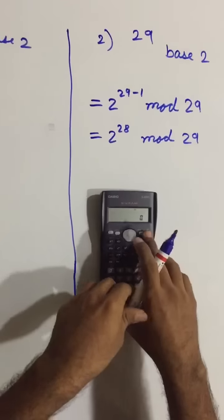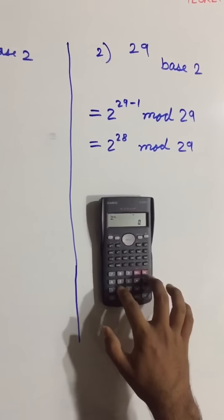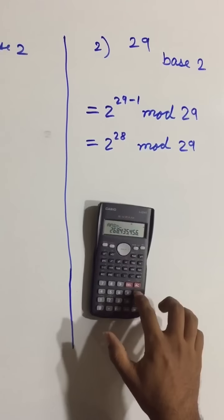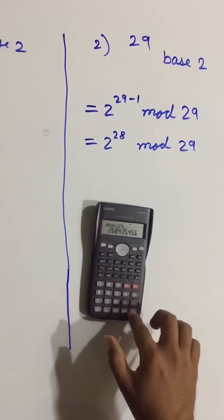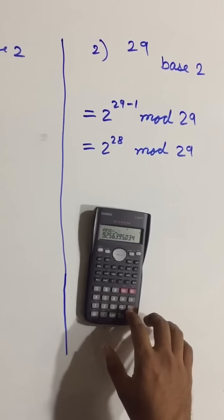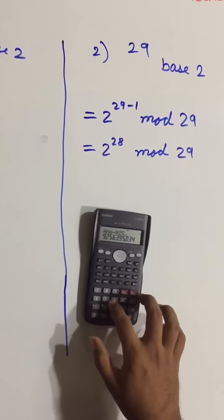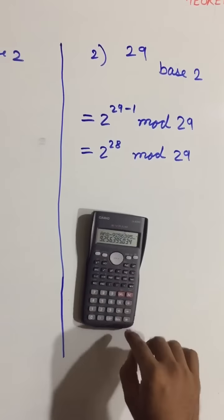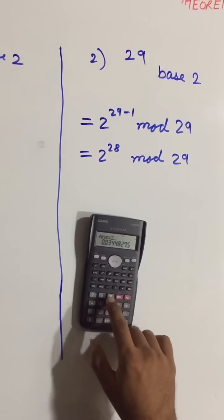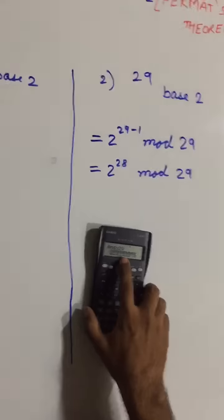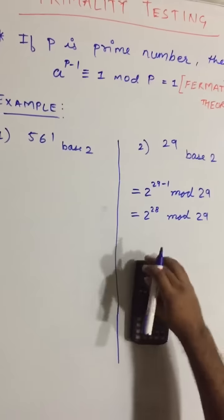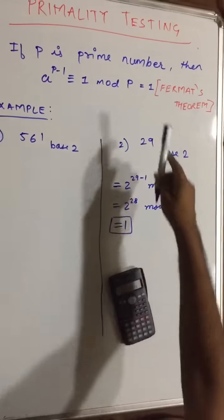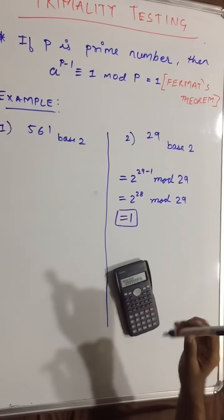2 raised to 28 gives us this: divide by 29 minus 9256395 multiplied by 29, which is very close to 1. It proves our equation.